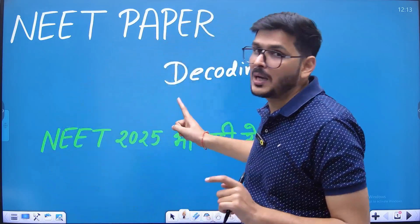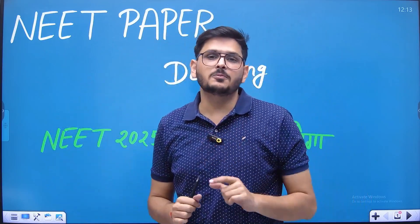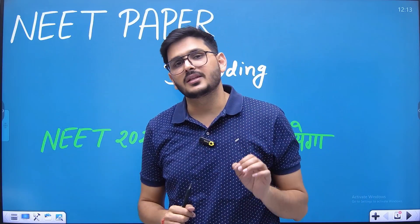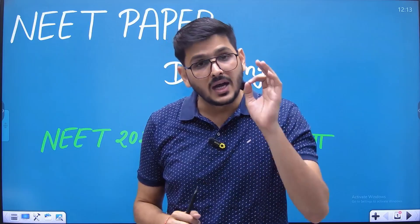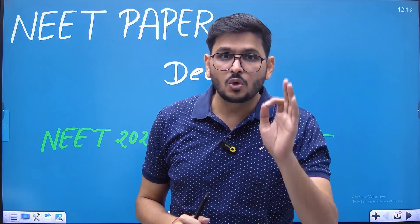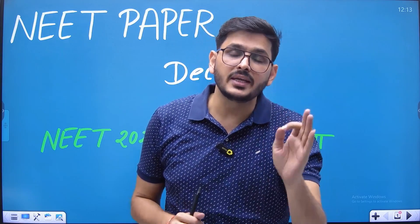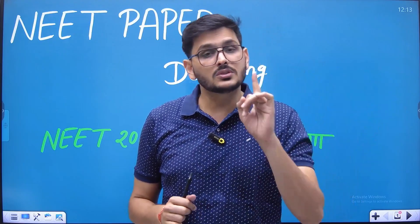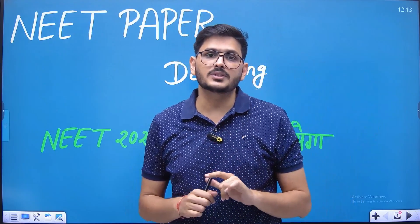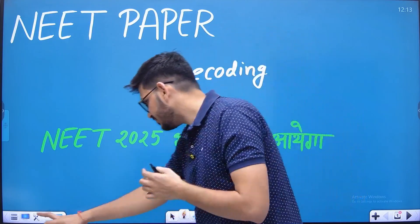I will show you with proof and guarantee that questions are coming every year from these 84 topics — total 40 questions are coming from these 84 topics. Which 84 topics am I talking about? Let's see.